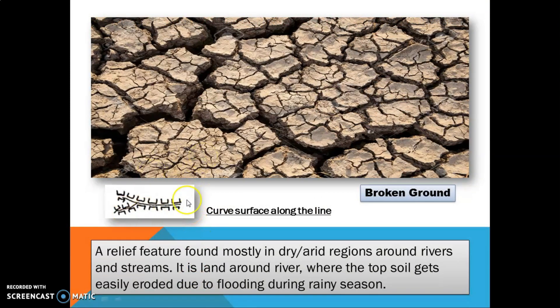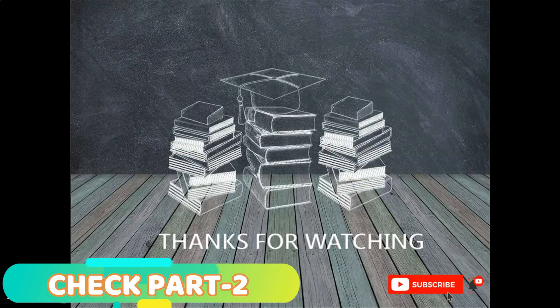The last symbol is broken ground, shown with a curved surface along a line. Broken ground denotes uncultivated land — a relief feature found mostly in dry or arid regions around rivers and streams. It is land along a river where the topsoil gets easily eroded due to flooding during the rainy season, and is generally found along the banks of streams or rivers in arid regions.